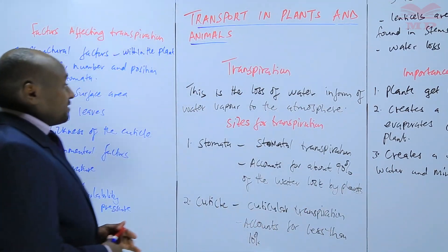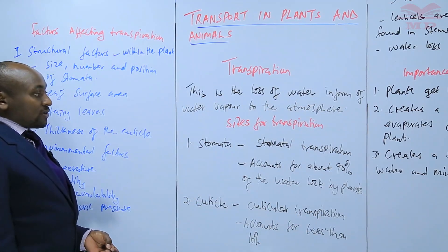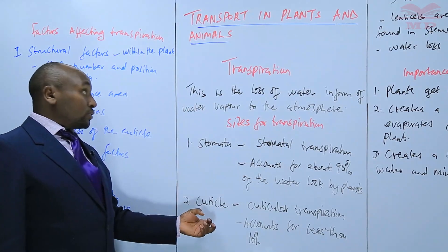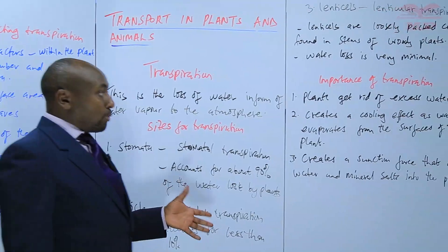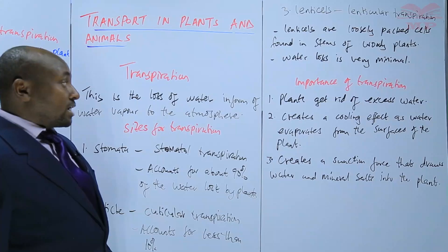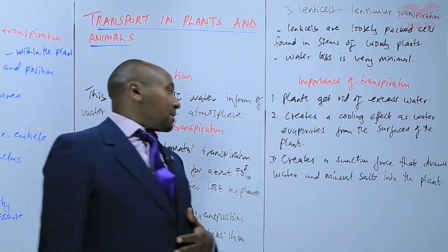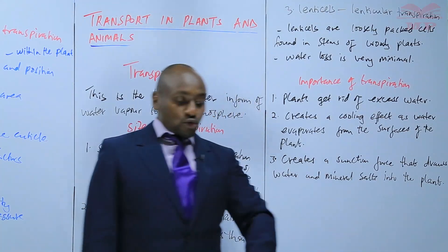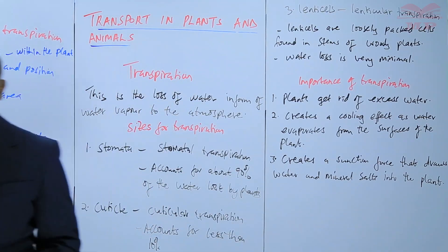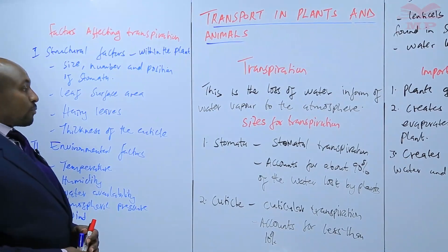Basically, we have discussed transpiration as the loss of water in form of water vapor to the atmosphere. We have discussed the sites for transpiration — stomata, cuticle, and lenticels — the importance of transpiration: getting rid of excess water, creating a cooling effect as water evaporates, and creating a suction force that draws water and mineral salts from the soil. Finally, we have looked at the factors that affect transpiration: the structural factors and the environmental factors.